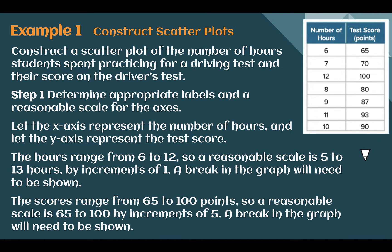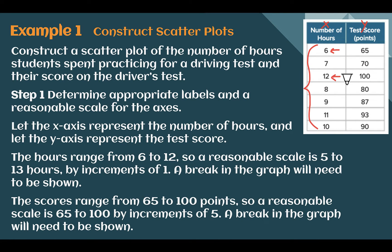Example 1: Construct scatter plots. Construct a scatter plot of the number of hours students spend practicing for a driving test and their score on the driver's test. We're given our data table. Let's determine appropriate labels and a reasonable scale for the axes. If x is our number of hours and y is our test score — x is independent, y is dependent — let's come up with a scale. Looking at the x-axis, my scores range from 6 at the lowest to 12 at the highest, so I don't need to go much past 12. I could use a break in my graph and start near 6. If we start at 5 and end at 13, that gets all of our data points. They're all increments of 1, so we should make our graph counting by 1s as well.